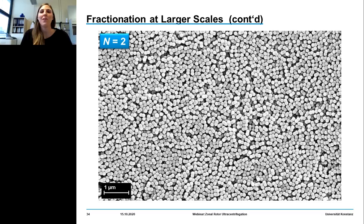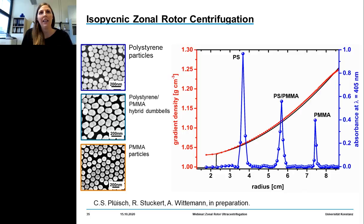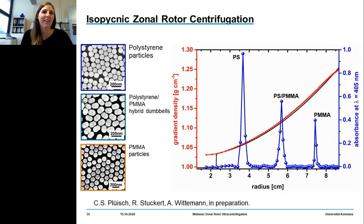So far we talked about rate-zonal separation, where we sorted colloidal molecules according to their sedimentation coefficient. In our latest experiment, we probed a mixture of polystyrene particles, PMMA particles, and hybrids of the two materials. You can see that we can band them well according to their buoyant density, and we can use this technique to precisely detect the density of these complex dumbbell-shaped hybrid particles — obtaining the full density profile rather than just an averaged value.